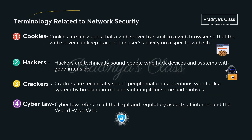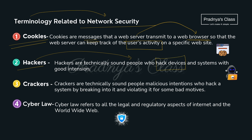Let's discuss some terminologies related to network security. First is Cookies — a text file or message which the server transmits to the browser to keep track of the user's activity; based on it we get suggestions. The second term is Hacker — people who try to hack a device but with good intention. Then there are Crackers — people with bad motives who try to hack your system.